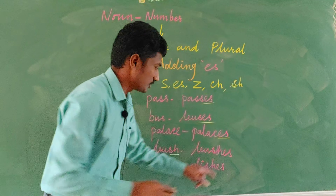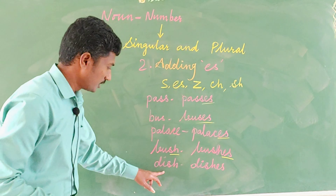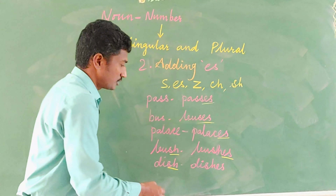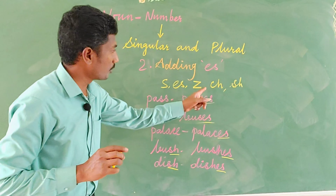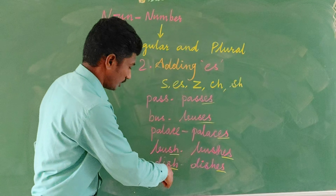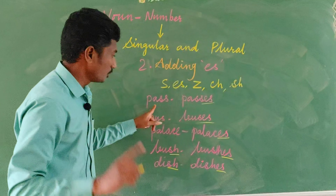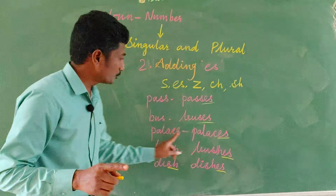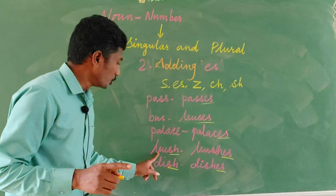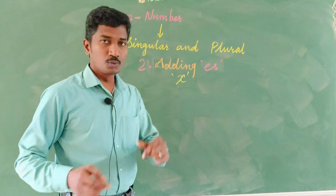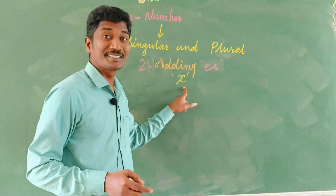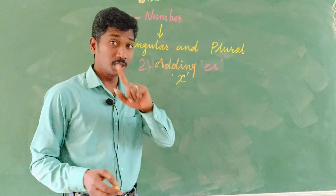Bush → bushes, dish → dishes — we add 'es' and they become plural. You see once again: pass → passes, bus → buses, palace → palaces, bush → bushes, dish → dishes. There is also one more: when it is ending in 'x', we also add 'es' to make plural. For example, box → boxes, fox → foxes.